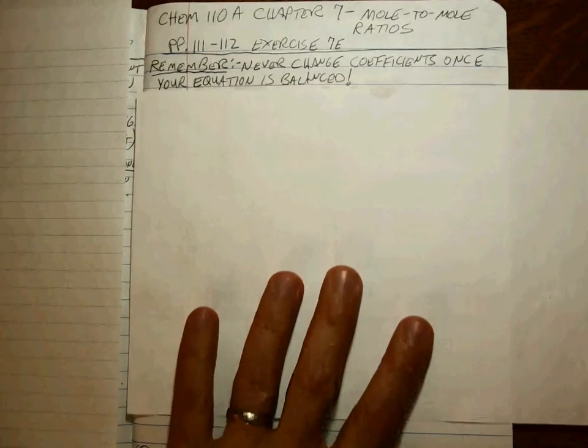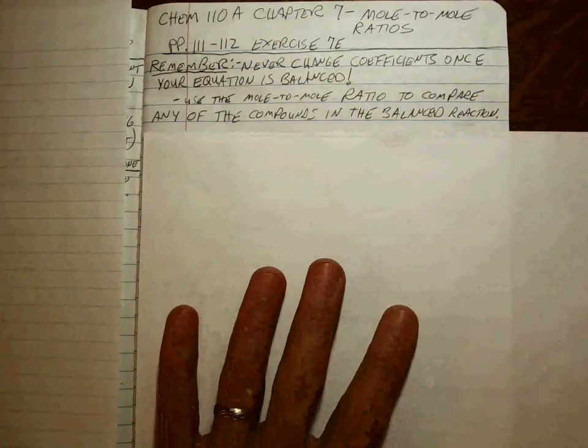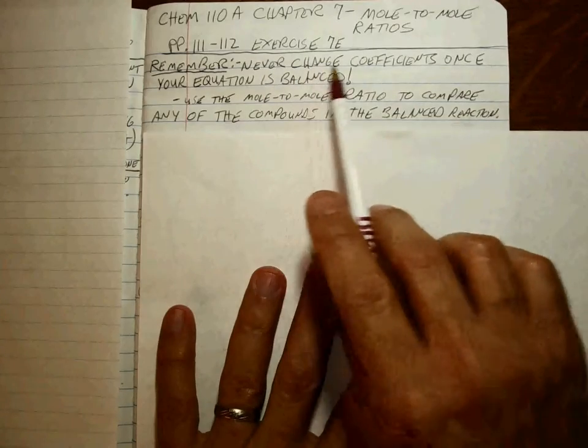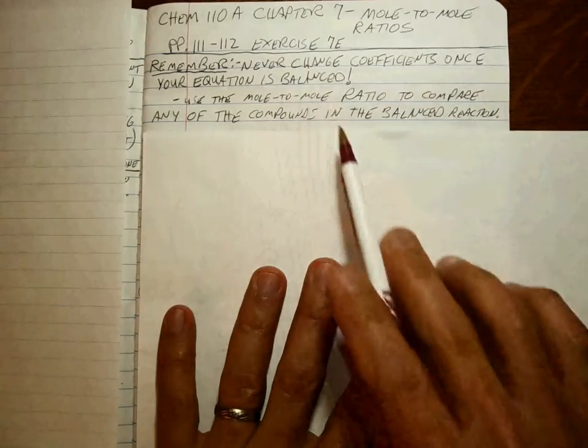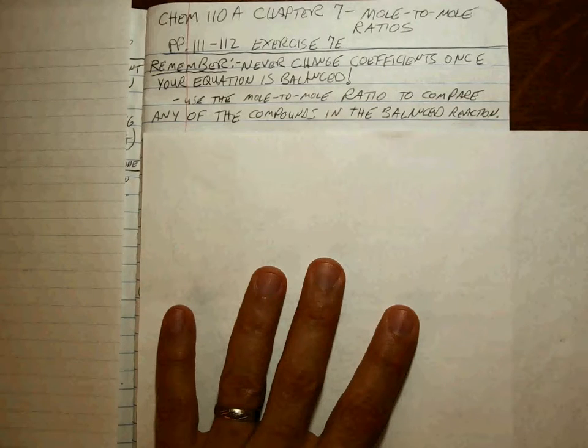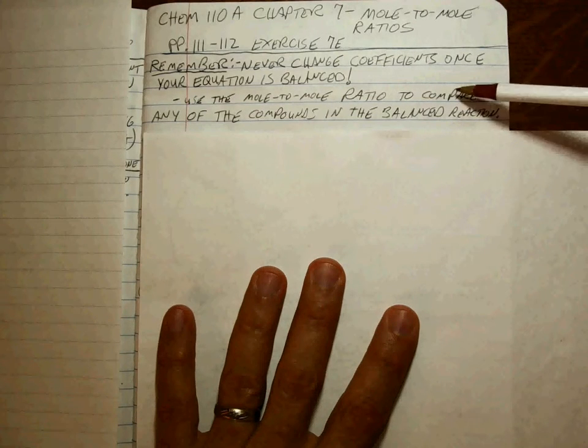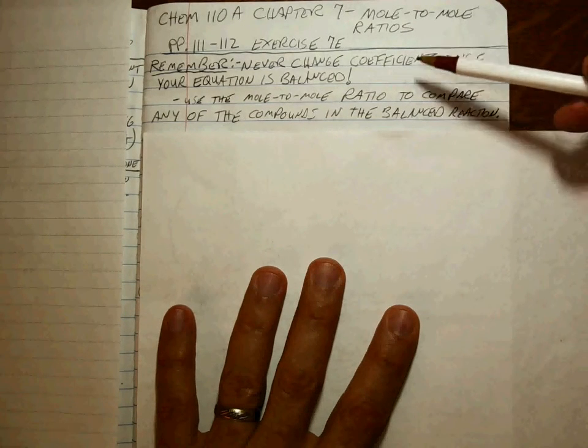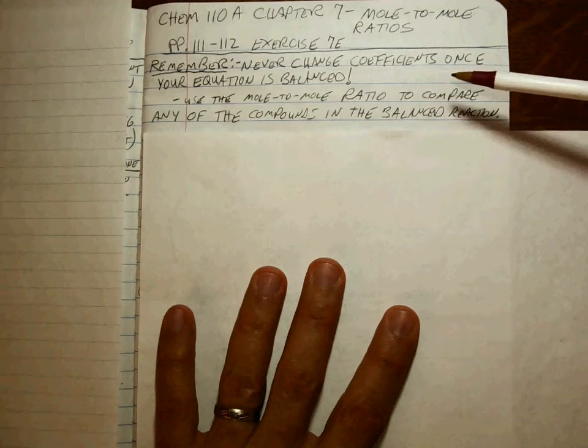A couple of things to remember: as always, first, never ever change the coefficients once your equation is balanced because you don't need to. The problem doesn't say anything about the ratio of reactants to products. It only tells you something about how much you start with or how much you're trying to end up with.